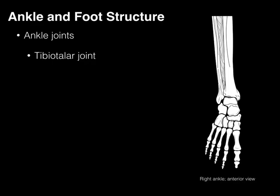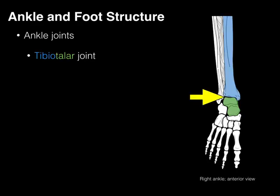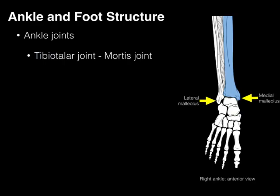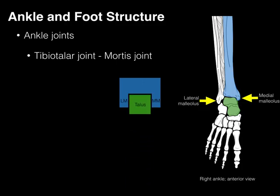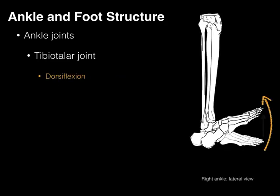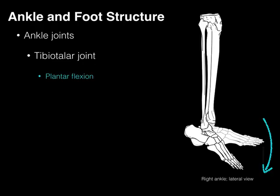First, let's talk about the tibiotalar joint, which is the articulation of the tibia and the talus, hence tibiotalar joint, and which forms a mortise-type joint. Looking at the medial malleolus and the lateral malleolus, it forms the first part of the mortise, and then in green there's our talus, which forms the second part. In between we have this mortise-type joint, which allows for movement in two directions: dorsiflexion and plantarflexion.